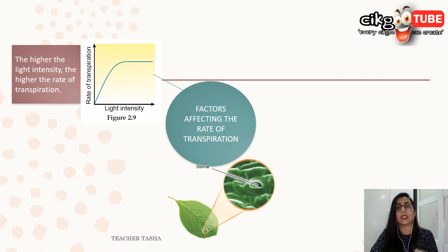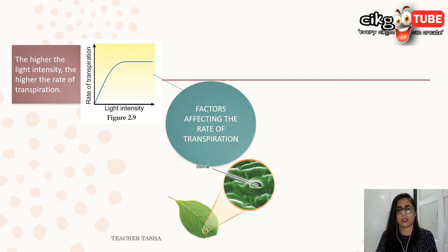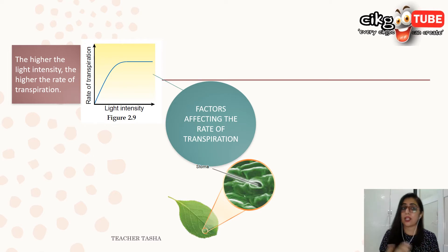In the dark, stomata close, evaporation rate decreases, and less water diffuses out, so the rate of transpiration is low. To summarize: the higher the light intensity, the higher the rate of transpiration; the lower the light intensity, the lower the rate of transpiration — it follows a higher-higher, lower-lower pattern.